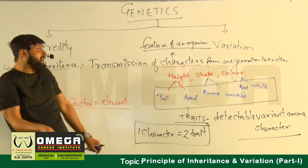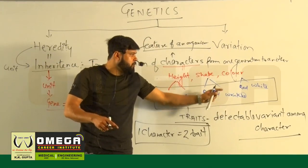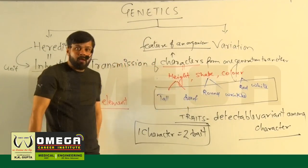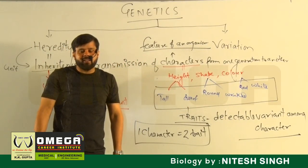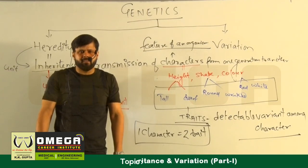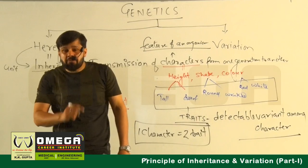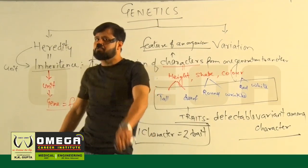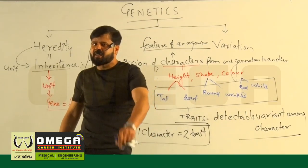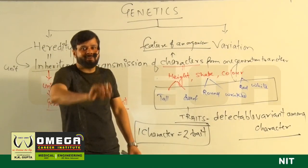But if you go inside the character, height becomes tall or dwarf, shape becomes round or wrinkled, and color becomes red or white. These specific detectable forms are traits. Remember: a trait can be dominant, and a character is not always dominant — a trait is dominant.